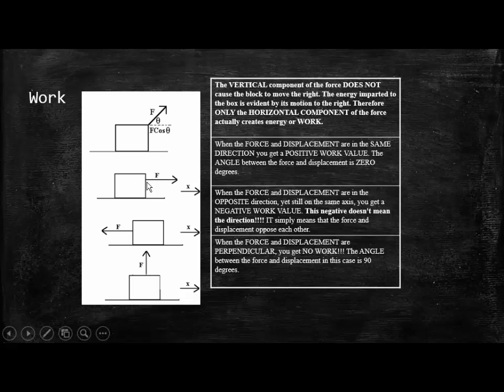So that's this example. Let's look at the second example. This is when you have an object that's moving to the right and the force is being applied to the right. So the force and the displacement in this case are in the same direction. This is what we call positive work. The angle between the force and the displacement in this case is zero degrees because they are parallel to one another. They are going in the same direction. Positive work.